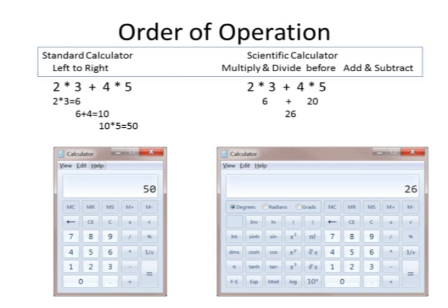The order of operation for computing a mathematical equation is different depending on whether you're in the Standard calculator or the Scientific. If you're in the Standard calculator mode, going from left to right, 2 times 3 plus 4 times 5 is going to end up giving you an answer of 50.